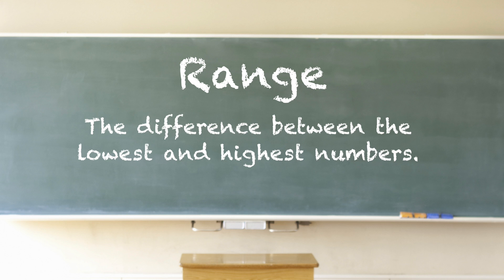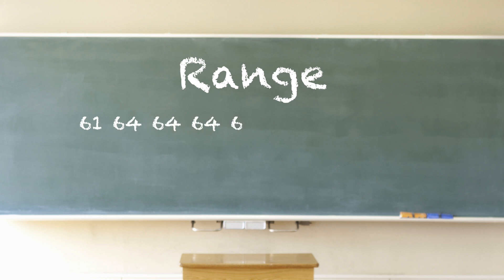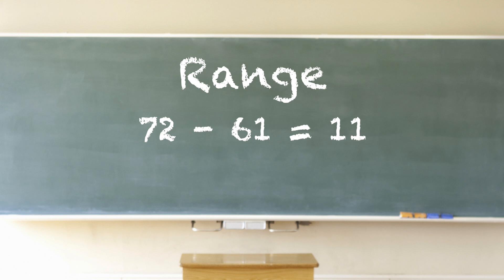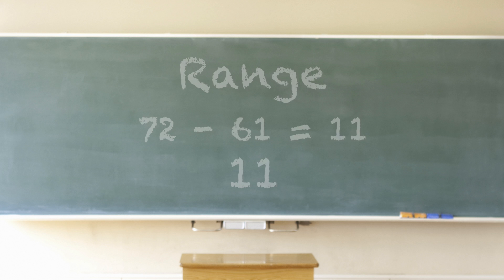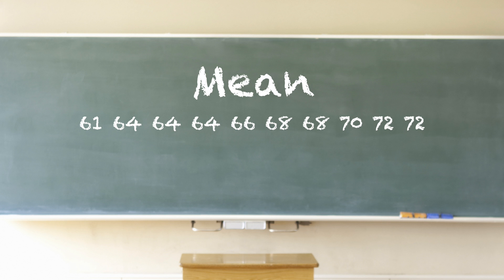Range: the range for a set of data is the difference between the lowest and highest numbers. Find the highest number and subtract the lowest number. So 72 minus 61 equals 11 — 11 is the range.